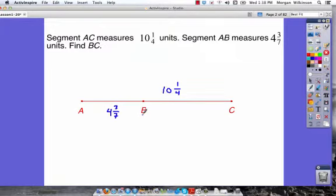What we need to do is figure out BC, and of course, B to C is going to have to be the total distance of 10 1⁄4 minus 4 3⁄7. So if we go through that math, 10 1⁄4 minus 4 3⁄7, we can find out our answer.